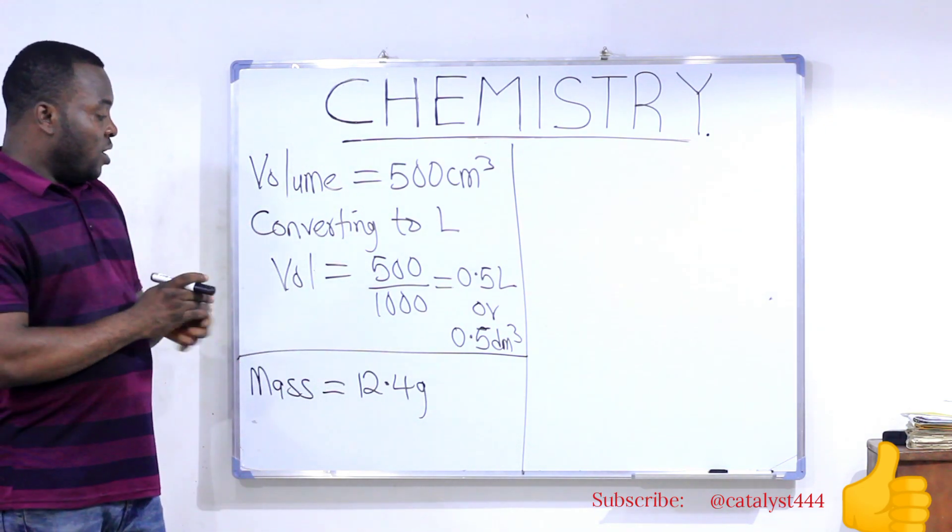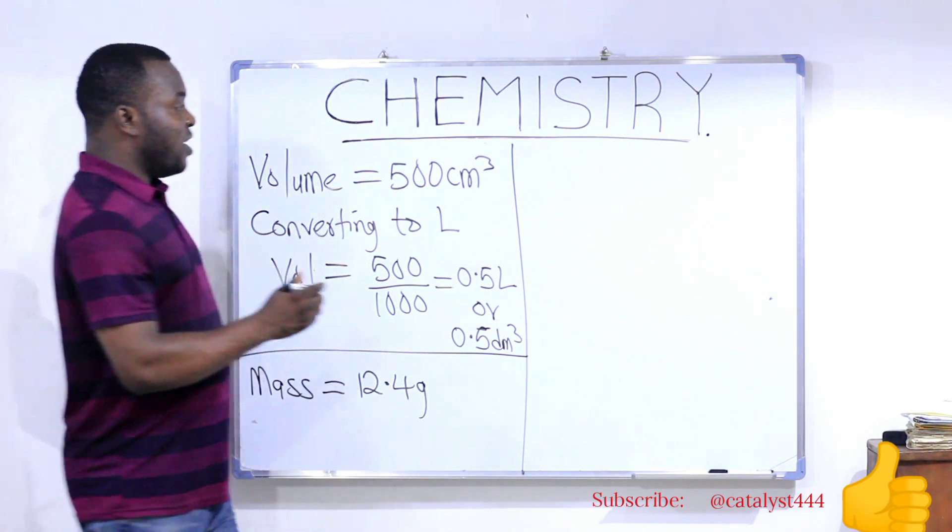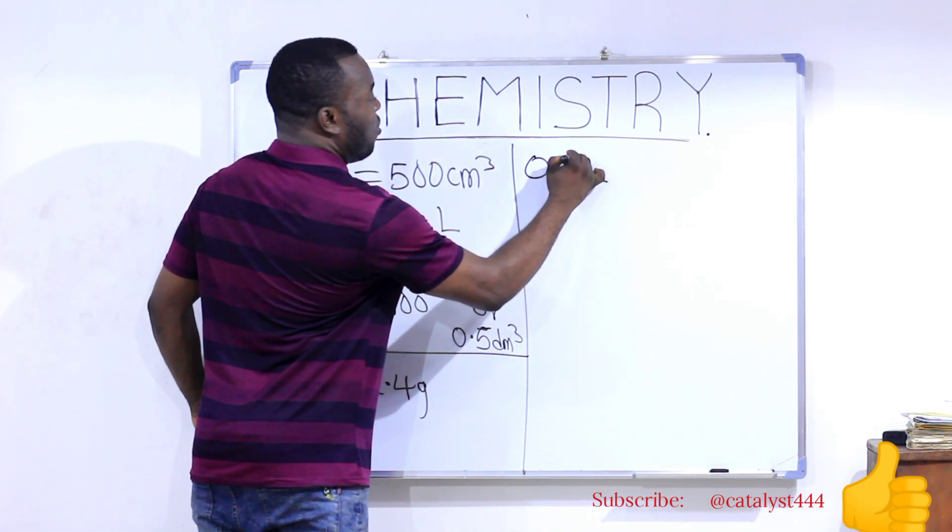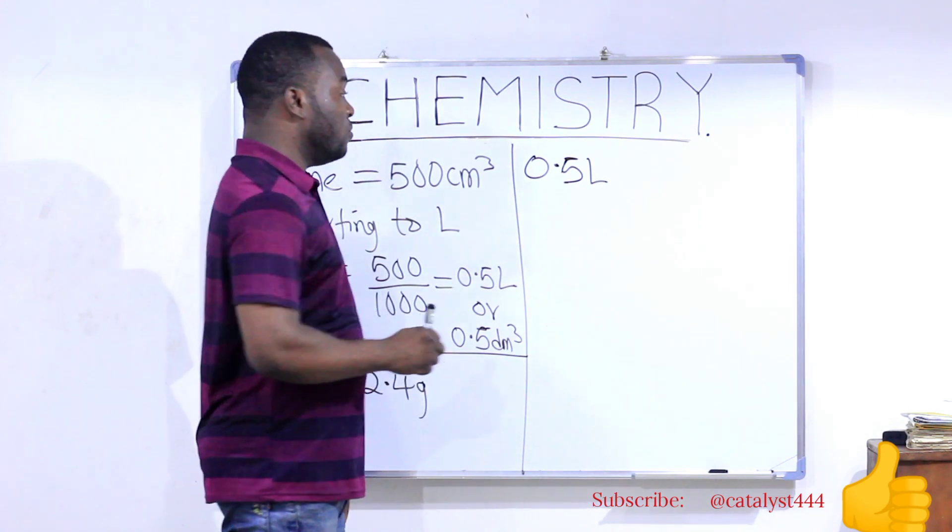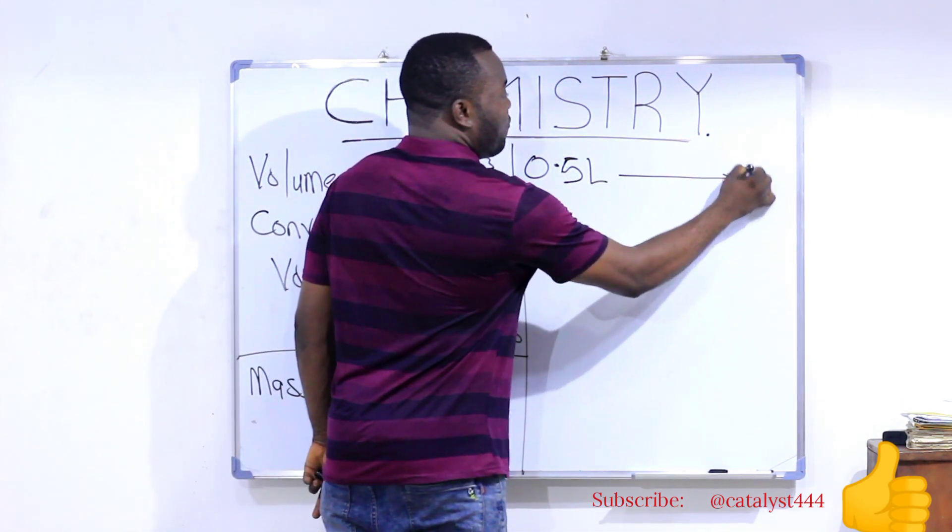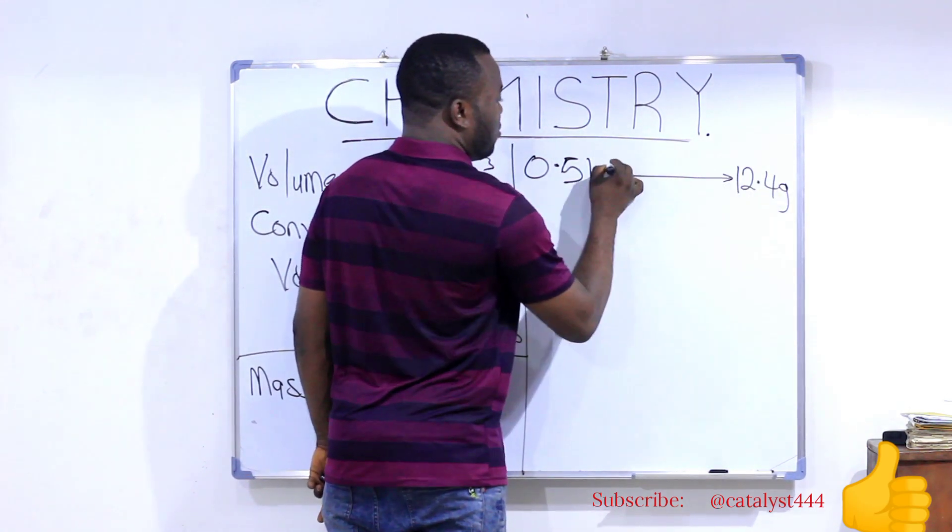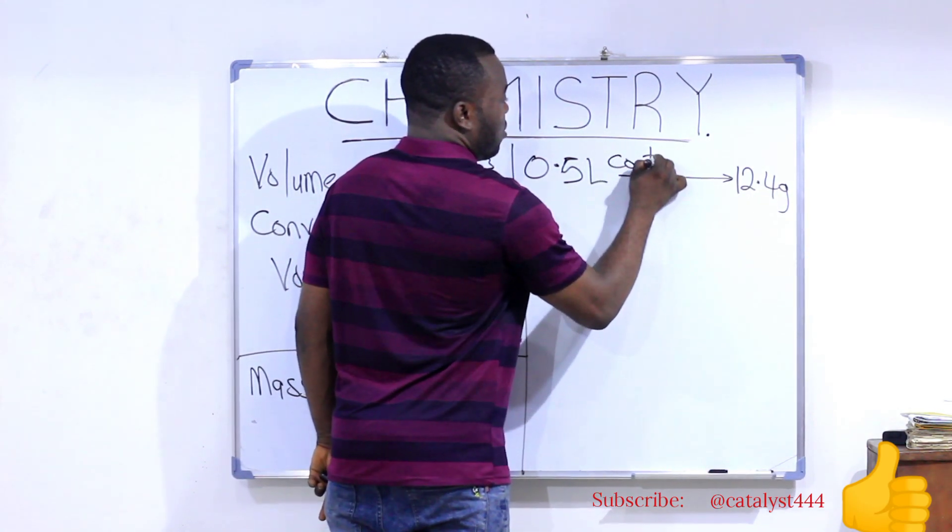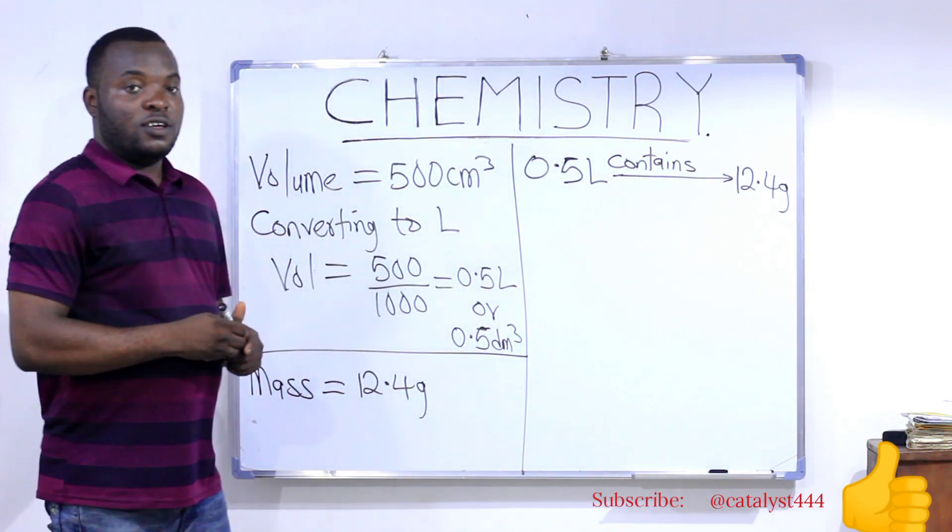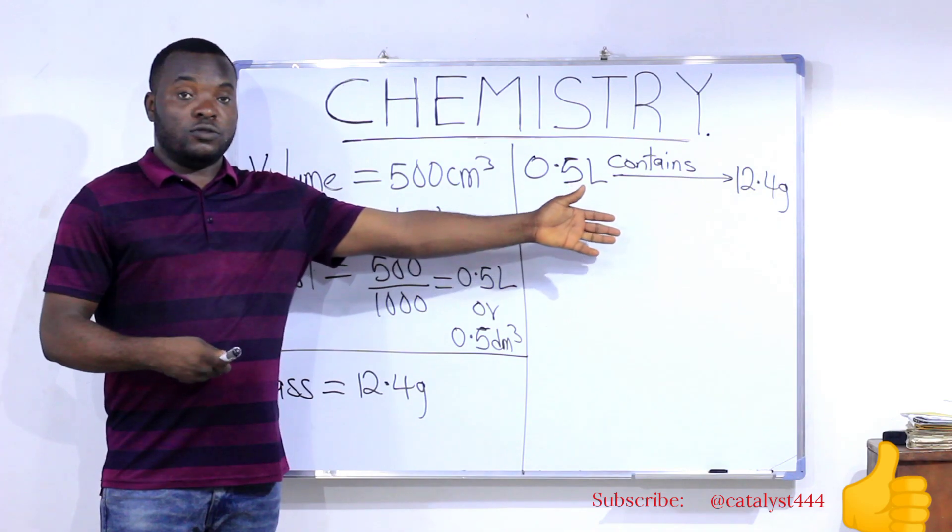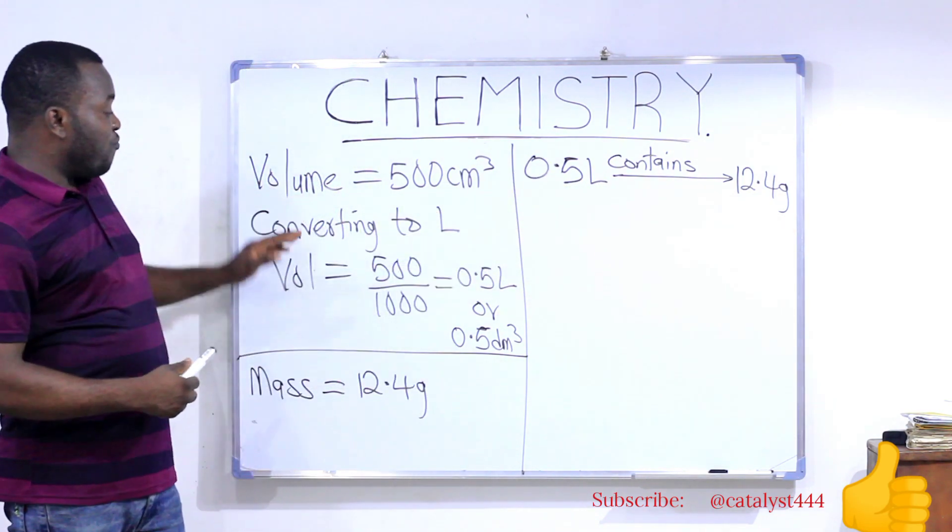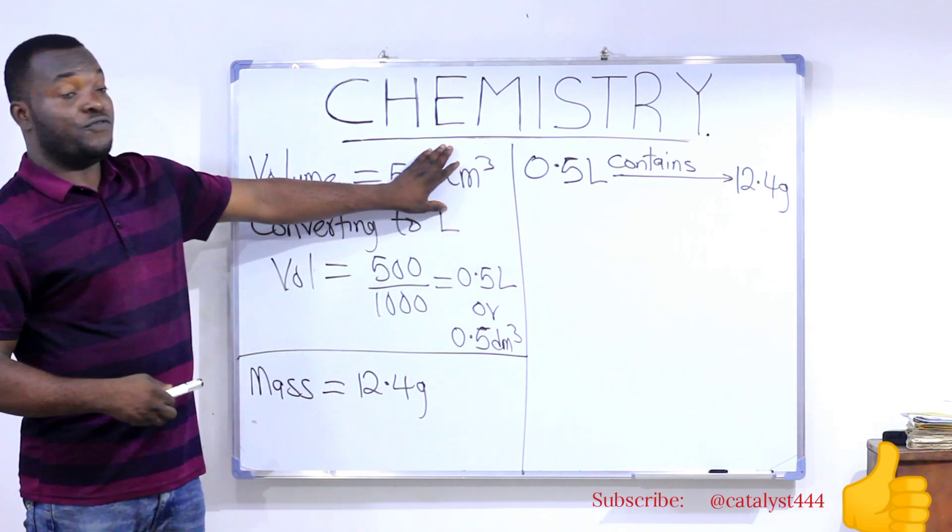We can now proceed. This thing simply means that 0.5 liters of that solution contains 12.4 grams of the salt. This is the meaning of the question. From the question, this was what they told us in the question. Remember, they said 12.4 grams of the salt is contained in 500 cm³.